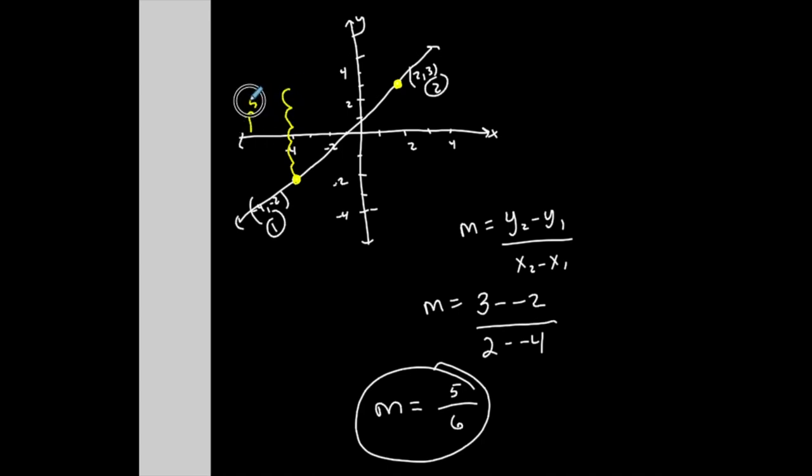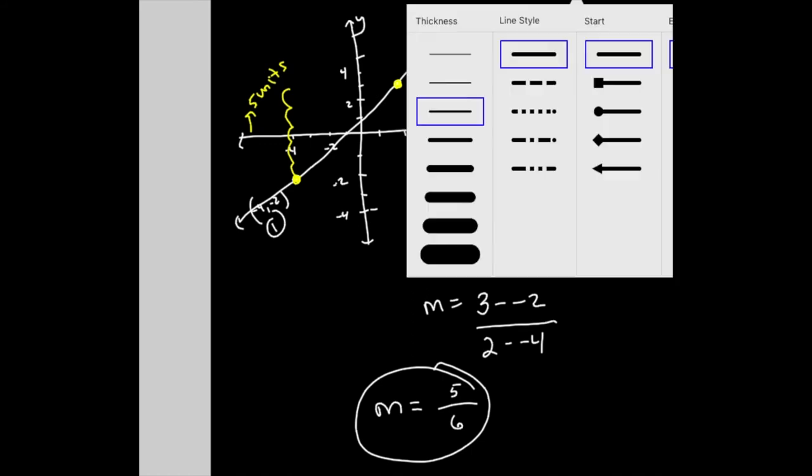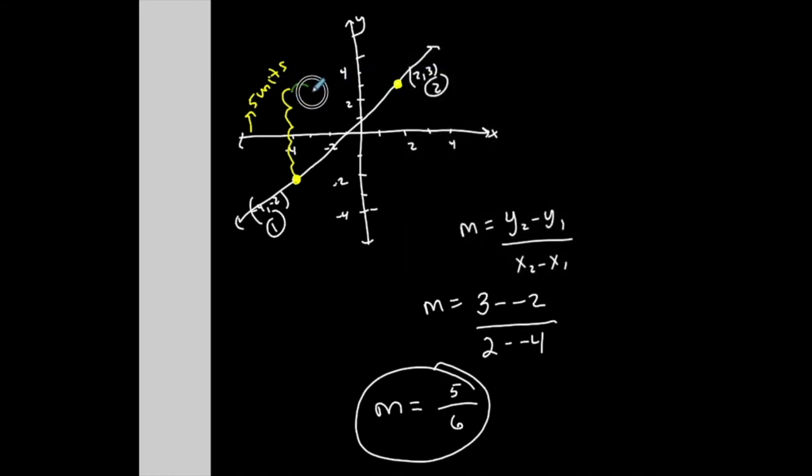I went up 5 units. Then what did I do horizontally? I went from here 1, 2, 3, 4, 5, 6. I went to the right 6 units. So to get from this point to this point, I had to go up 5 units and then to the right 6 units.